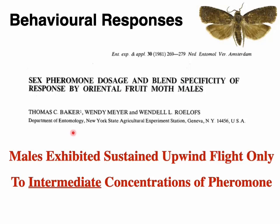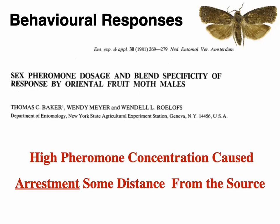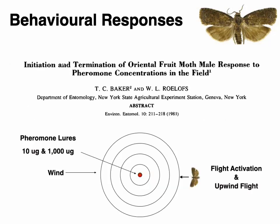There are a couple of key points from this paper. Males exhibited sustained upwind flight only to intermediate concentrations of pheromone. High concentrations of pheromone caused a halt some distance from the source. Tom Baker and Wendell Roloffs conducted a field experiment: they placed concentric rings at known distances from a center, with pheromone lures loaded with either 10 micrograms or 1,000 micrograms of pheromone, then released male OFM downwind to follow flight activation and upwind flight to these different concentrations.